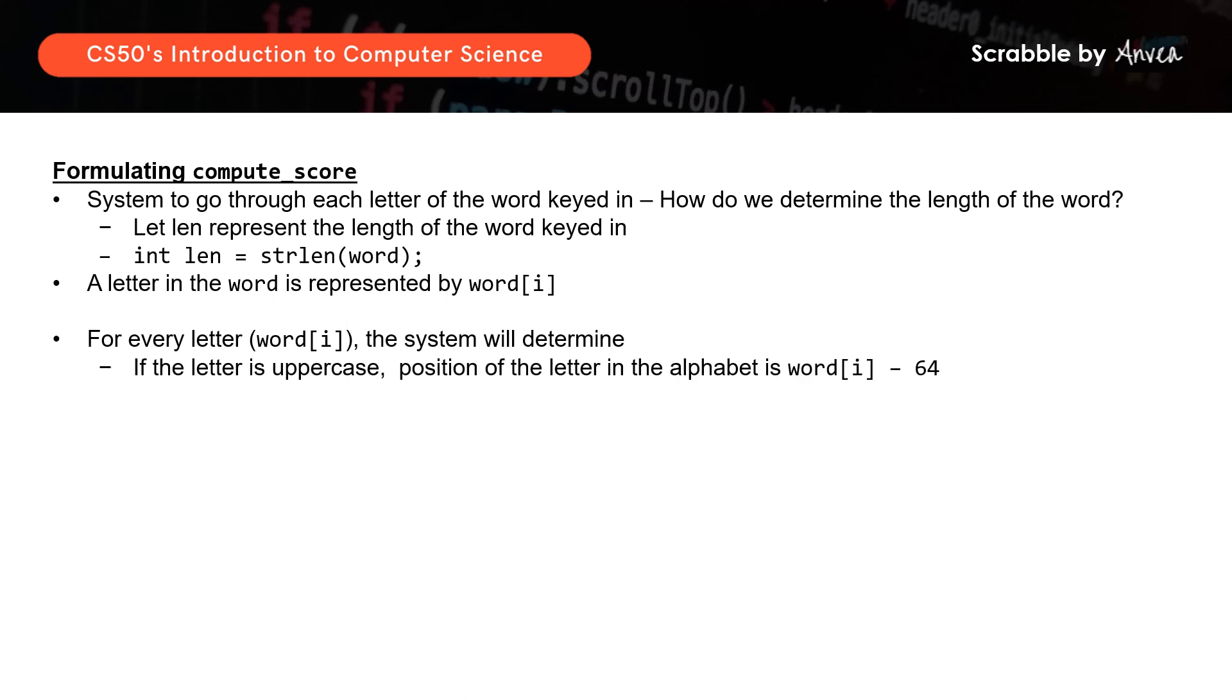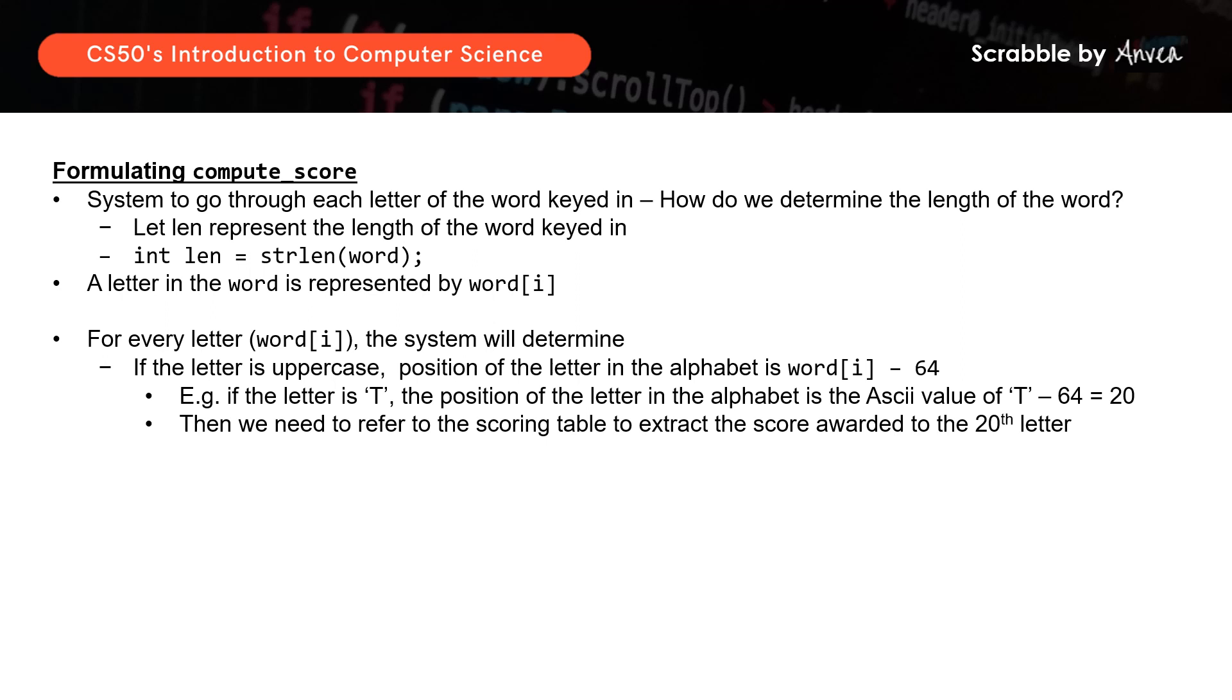So if the letter is uppercase, the position of the letter in the alphabet is word square bracket i, minus 64 as we discussed earlier on. So if the letter is uppercase T, the position of the letter in the alphabet will be taken to be the ASCII value of the uppercase T, which is 84 minus 64 equals to 20. So this is how we know that T is the 20th letter of the alphabet, and we need to extract the 20th score in the score table.